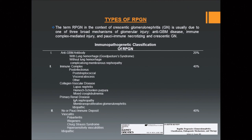The term RPGN in the context of crescentic glomerulonephritis is usually due to one of three broad mechanisms of glomerular injury: anti-GBM disease, immune-complex mediated injury, and pauci-immune necrotizing and crescentic glomerulonephritis.